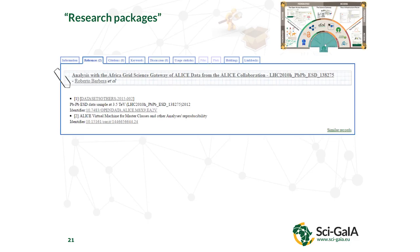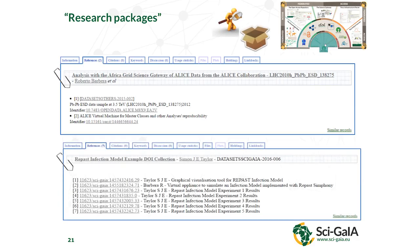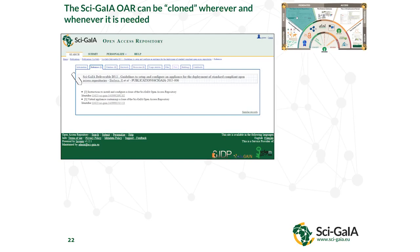Once you have papers and datasets with DOIs, you can connect them and create what we call research packages. For example, for the analysis of some high energy physics data through a science gateway, you have the analysis, the datasets, and the virtual machine containing the software — each with a DOI — and together these form a research package. You can then reanalyze and reuse the data. The open access repository itself is a research object, with guidelines to build a repository, virtual machines containing a clone of the repository, and all instructions to install it.